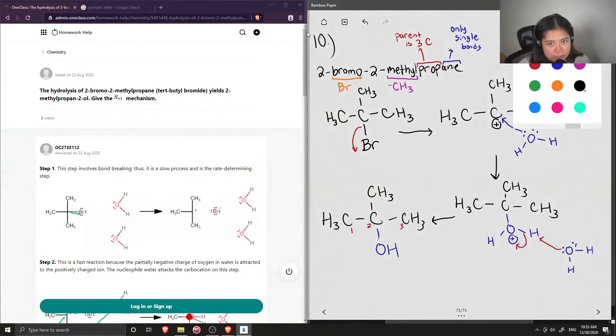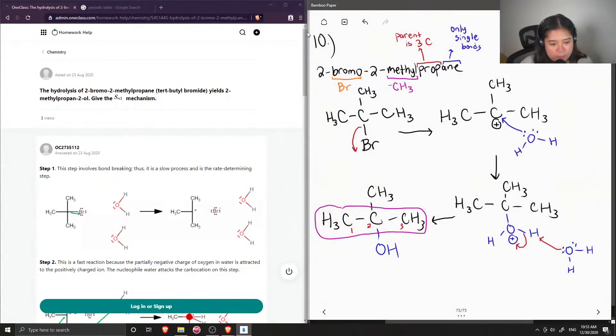In order to name this, we need to find out what our parent carbon chain is. So this will be the longest carbon chain containing all the most important things. So in this case, it is this three carbons as our chain. It can also be the top one as well, but just to make it easier, I'll circle the three that are in a row.